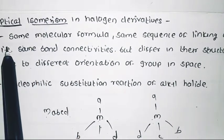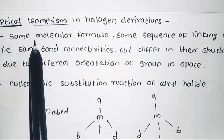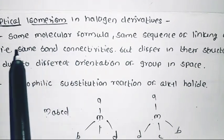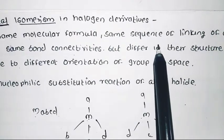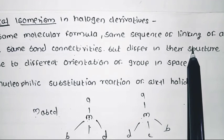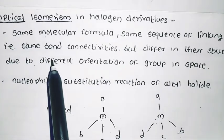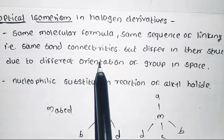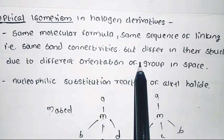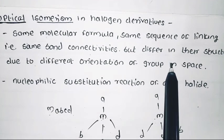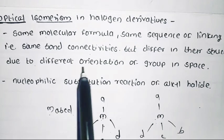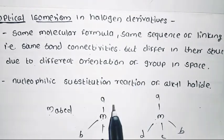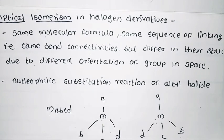Isomers means molecular formula same, bond connectivity same, but different in their structure due to different orientation or different position of groups in space. This applies to groups attached to any metal or atom.